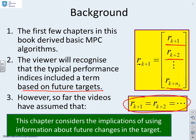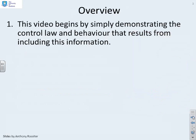This chapter is going to consider the implications of using information about future changes in target. We're no longer assuming future targets are all the same value, but using the actual values, assuming we know what they are. This video will demonstrate the control law and behavior from including this future information.